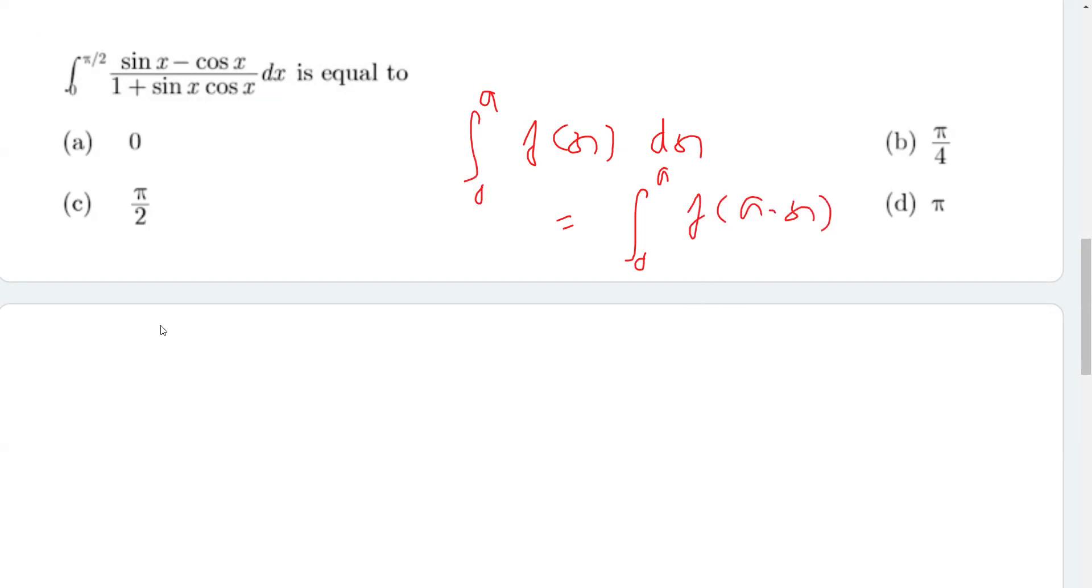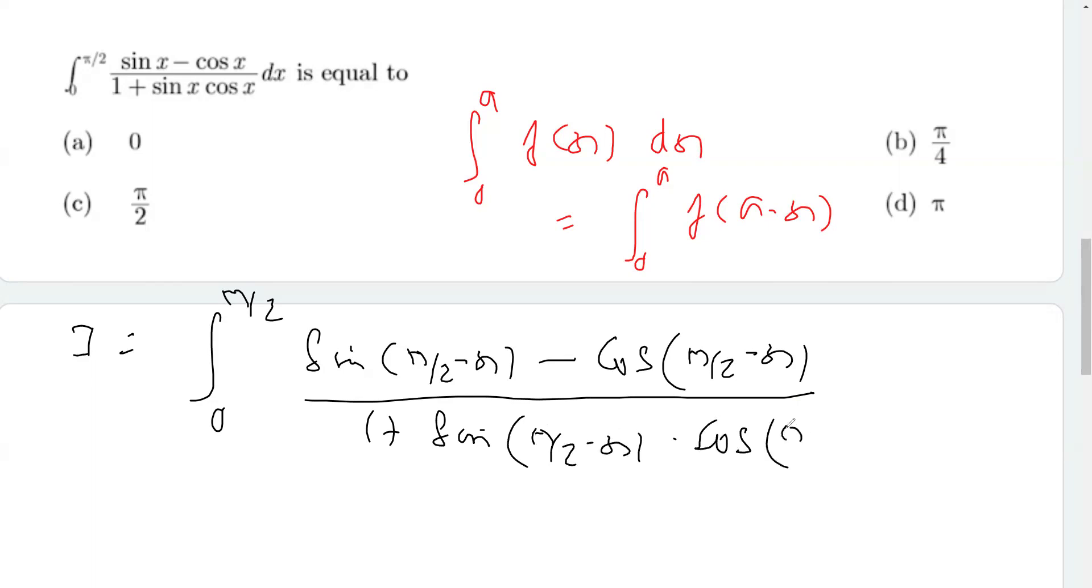We are going to apply this property. Therefore, I becomes integral from 0 to π/2 where sin x becomes sin(π/2 - x), minus cos x becomes cos(π/2 - x), over 1 plus sin(π/2 - x) times cos(π/2 - x) dx. I'm marking this as equation 1.